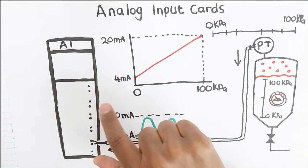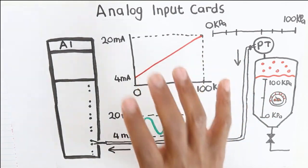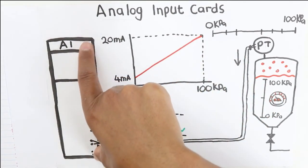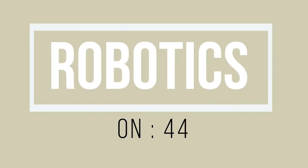Fortunately, the conversion back to the pressure values doesn't require much brain power. The circuitry in the analog input card does this for you.